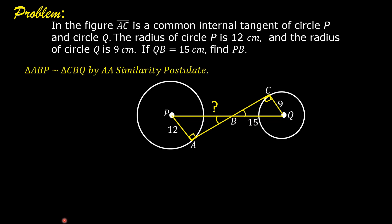Therefore, we can say that triangle ABP is similar to triangle CBQ by AA similarity postulate.